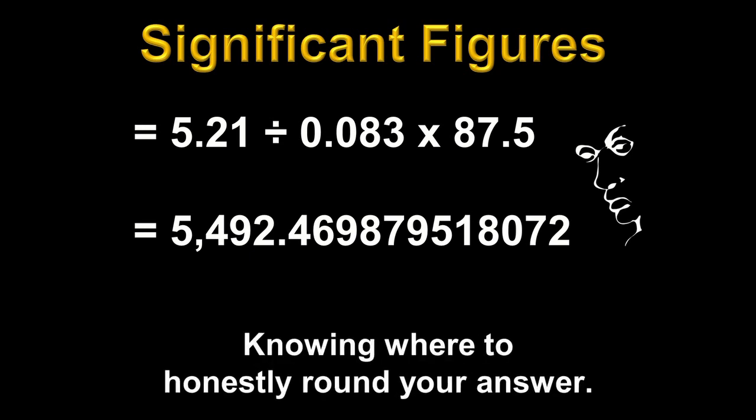What we're trying to do with significant figures is knowing where to honestly round our answer. In physics, we don't always round to three decimal places or something like that — we always round to the correct decimal place. And the correct decimal place sometimes is three, sometimes four; it changes depending on the situation.